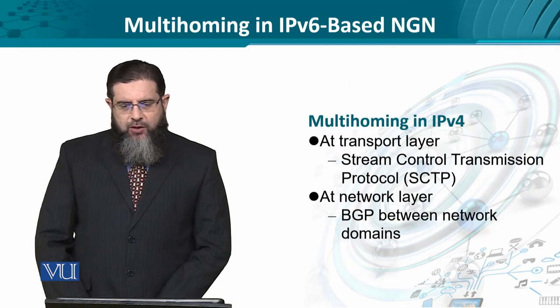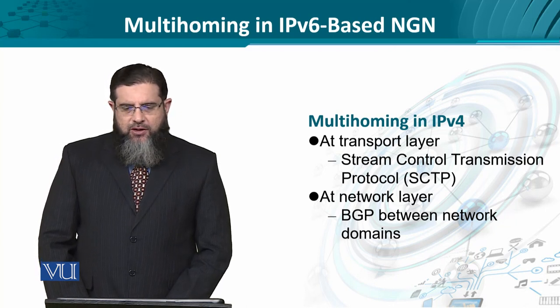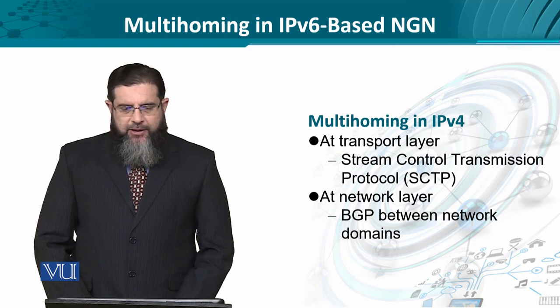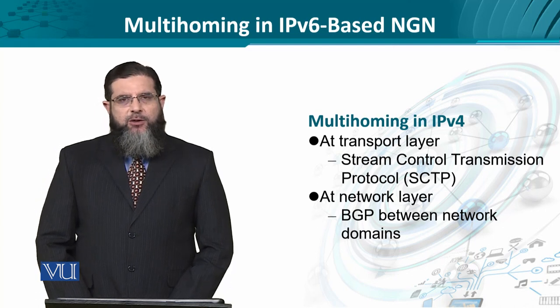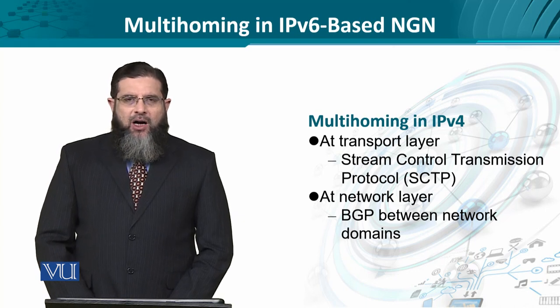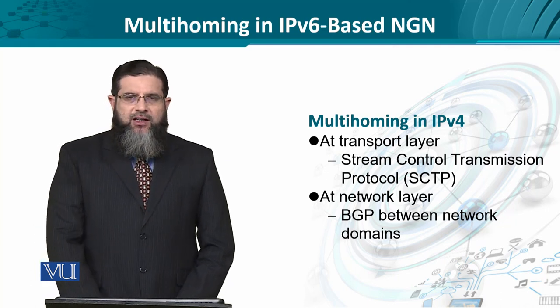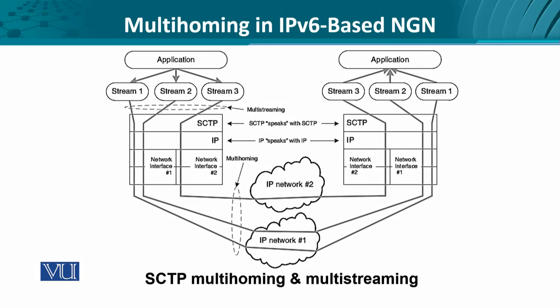In IP version 4, at the transport layer, Stream Control Transmission Protocol (SCTP) has been used to provide multihoming. Similarly, at the network layer, we have BGP paths which are advertised through eBGP between different autonomous systems or domains. We will quickly run through SCTP for multihoming and multistreaming.